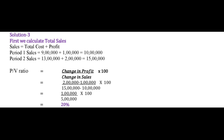The formula for Sales is: Total Cost plus Profit. By adding profit to total cost, we can obtain sales. Therefore, we first calculate sales in this question. Period 1 Sales: 9 lakh + 1 lakh = 10 lakh rupees (total cost is 9 lakh and profit given is 1 lakh). Period 2 Sales: 13 lakh + 2 lakh = 15 lakh rupees. This way, sales for both periods are calculated.